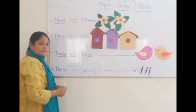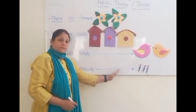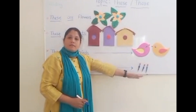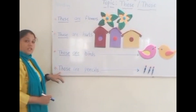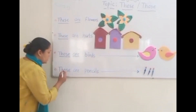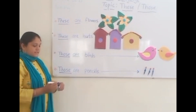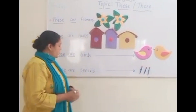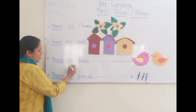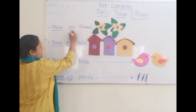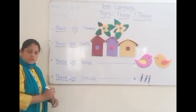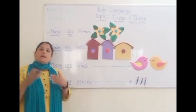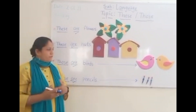Those are pencils. You can see an arrow, which makes sense that the pencils are far away, so we have written 'those'. And the pencils are many — 1, 2, 3 — so we have written 'are'. 'Are' is common in both 'these' and 'those'. Why? Because the things are in plural form in both cases.